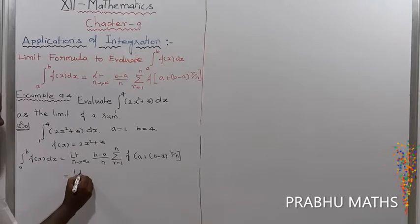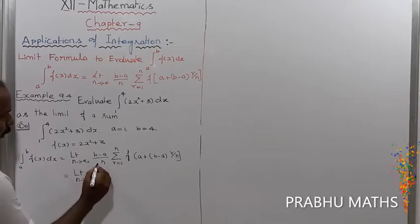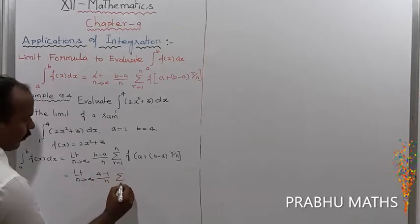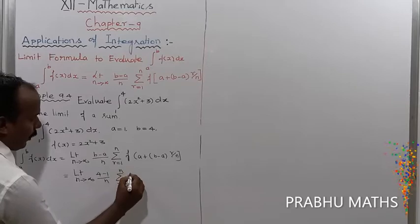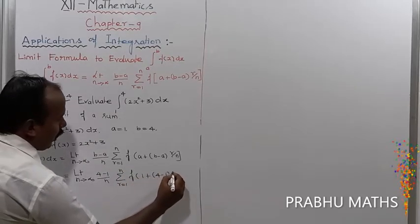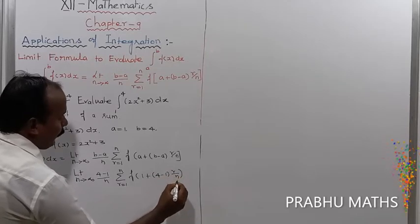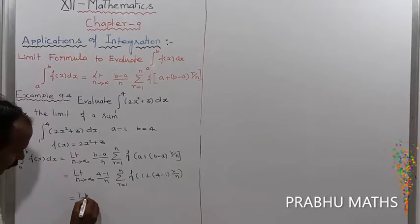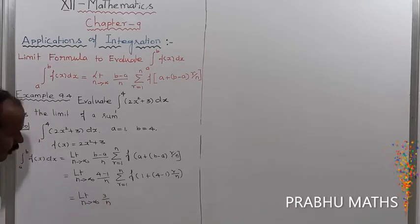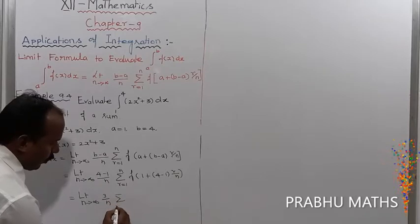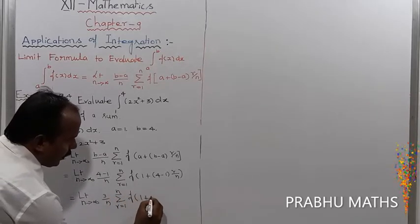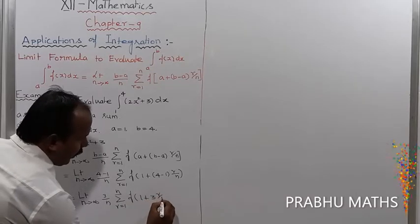Now applying this formula: limit as n tends to infinity of (4 minus 1) by n, summation of r from 1 to n of f of 1 plus (4 minus 1) times r by n. This equals limit n tends to infinity of 3 by n, summation r from 1 to n of f of (1 plus 3r/n).